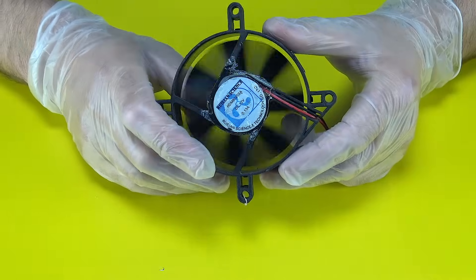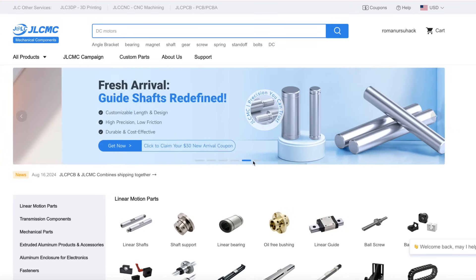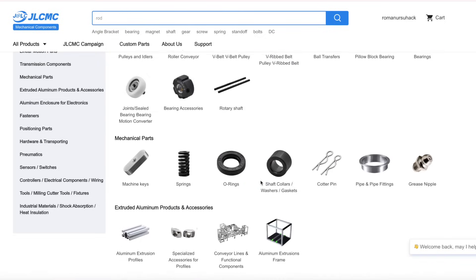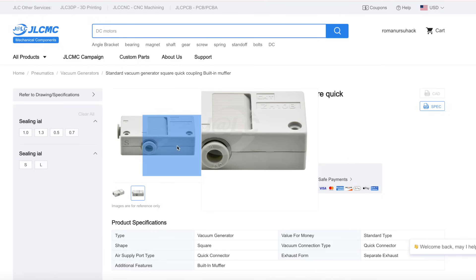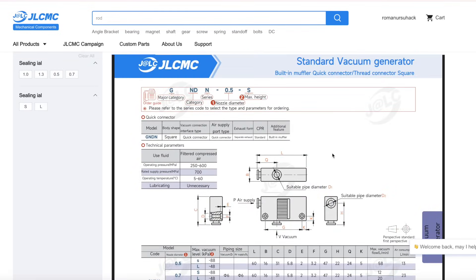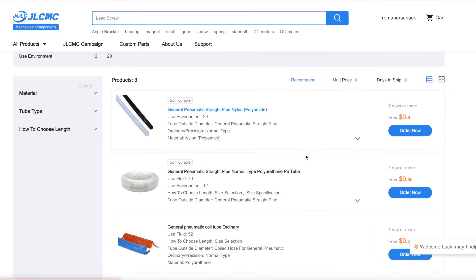We'll get to the compressor, fan, and other components a bit later. But first, I ordered a vacuum generator from my favorite site, JLCMC.com. This tool is crucial for removing air and excess moisture from the system before we fill it. If you want your setup to work reliably and efficiently, this step is a must.